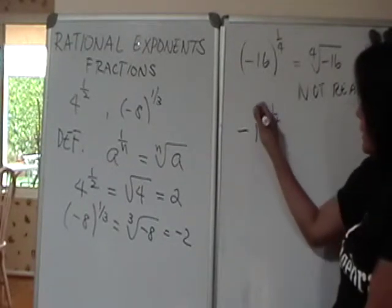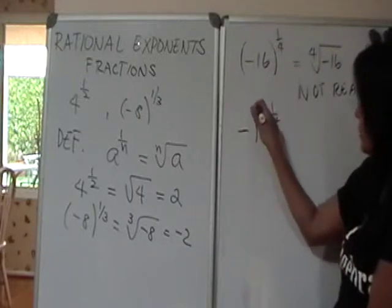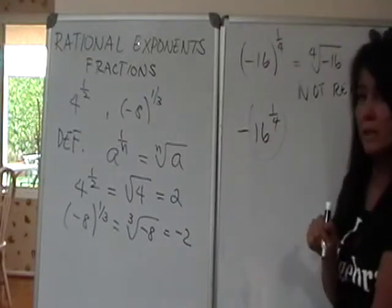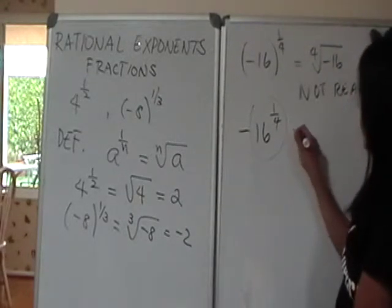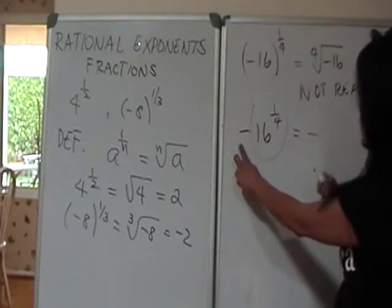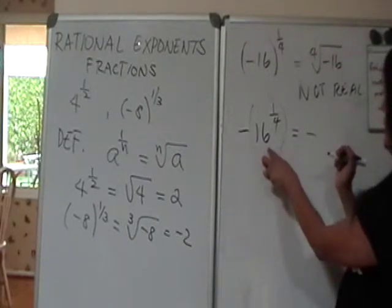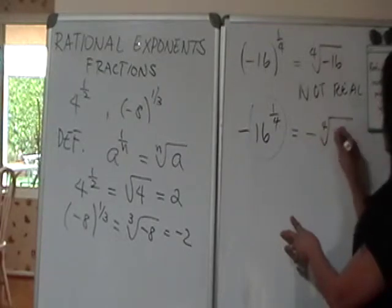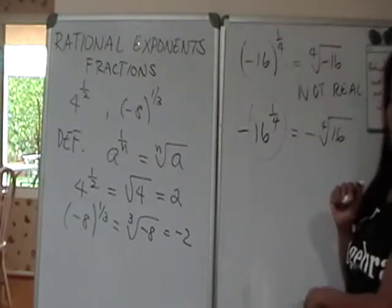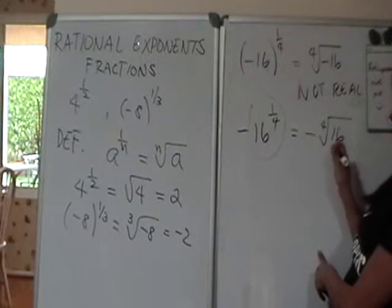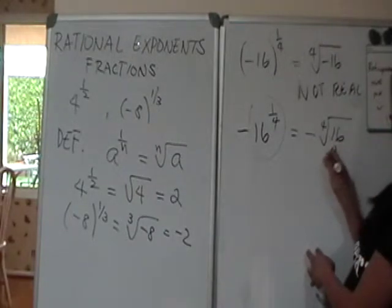Negative 16 to the 1/4. I hope now you know that really the negative is not included in raising to the 1/4. It's really just the 16 that you're raising to the 1/4. So you have to keep that negative sign.